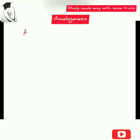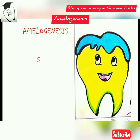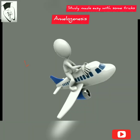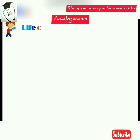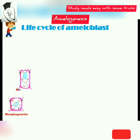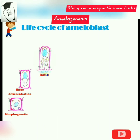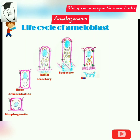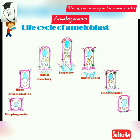Amelogenesis is the formation of enamel. To understand how it occurs, we first look at the life cycle of ameloblasts, since the ameloblast forms the enamel. The stages of amelogenesis are: morphogenetic stage, histo-differentiation stage, initial secretory stage, secretory stage, maturative stage (where ameloblasts are ruffle-ended and smooth-ended), and finally the protective stage.